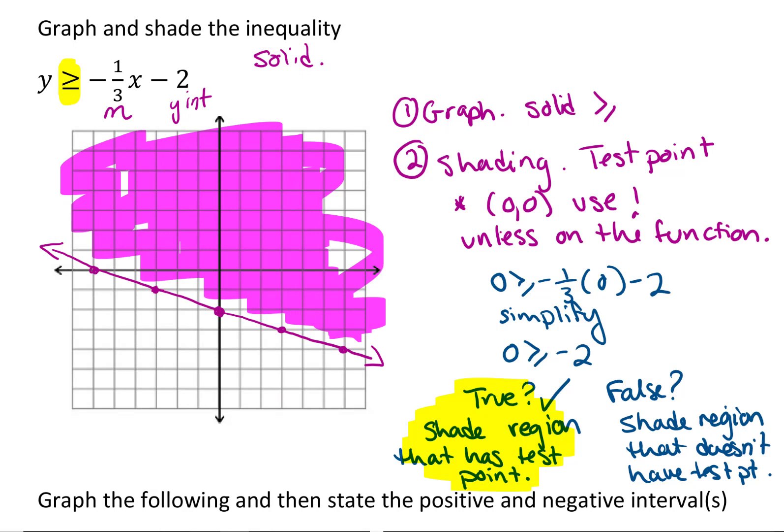If your answer was false, even though ours wasn't, then you shade the region that does not hold the test point.